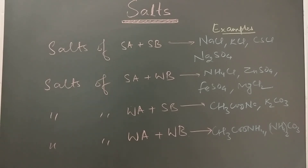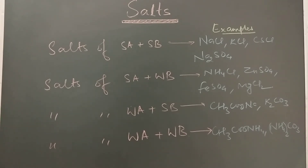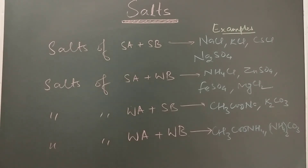Salts of strong acid and weak base — examples are ammonium chloride, zinc sulfate, ferrous sulfate, and magnesium chloride, where the anionic part comes from a strong acid and the cationic part comes from a weak base. The pH of these salts is less than 7 because it is the salt of a strong acid and weak base.